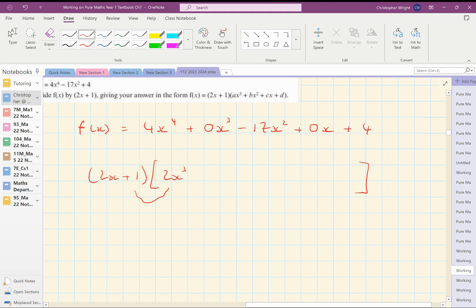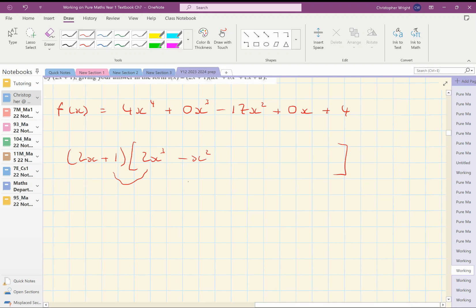Now, I don't want 2x³ in my answer; I want 0x³, so I'm going to need minus 2x³. How am I going to get minus 2x³? Well, I'm going to write minus x² here because when that multiplies by 2x, it gives me the minus 2x³ that I need.